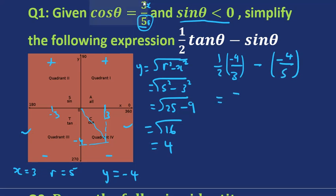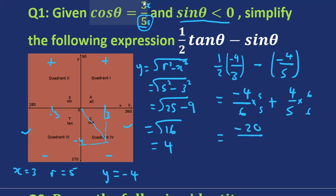If we simplify further, we've got negative 4 over 6, and of course that's positive 4 over 5. To simplify, we multiply each fraction by the other fraction's denominator to make the denominators the same. It's negative 20 over 30, and 4 times 6 is 24 over 30. Now that the denominators are the same, we can add: negative 20 plus 24 is 4 over 30, which simplifies to 2 over 15.